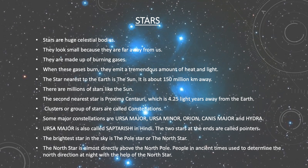The star nearest to the Earth is the Sun, which is about 150 million kilometers away. There are millions of stars like the Sun. The second nearest star is Proxima Centauri, which is 4.25 light-years away from the Earth. Clusters or groups of stars are called constellations. Some major constellations are Ursa Major, Ursa Minor, Orion, Canis Major and Hydra. Ursa Major is also called Saptarishi in Hindi. The two stars at its ends are called pointers. The brightest star in the sky is the Pole Star or North Star, which is almost directly above the North Pole. People in ancient times used to determine the north direction at night with the help of the North Star.